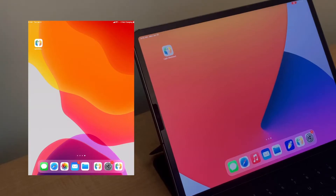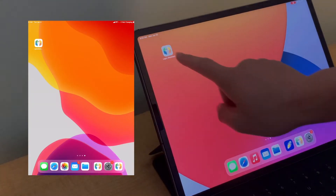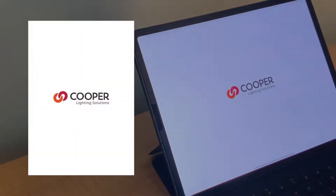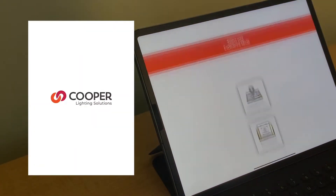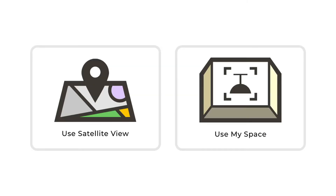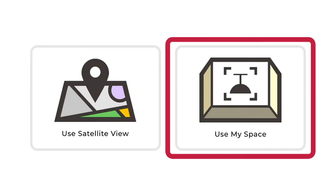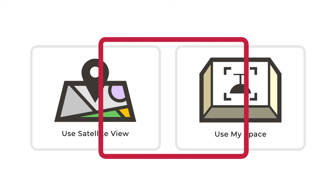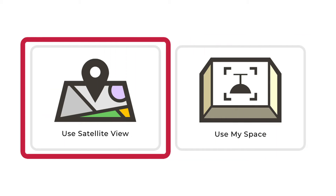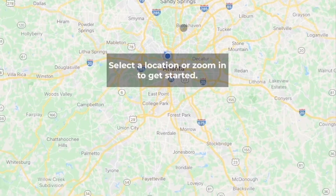Once you've downloaded the app or updated your existing app, you can open it and you'll see that instead of just going straight to the AR view, you now have two options. Use MySpace opens the typical camera view that you're used to seeing in the AR app, or you can choose to use Satellite View.